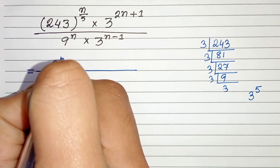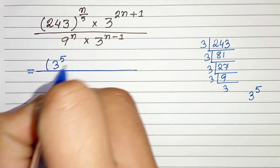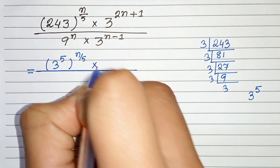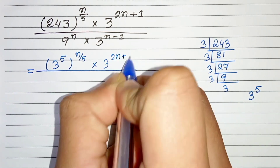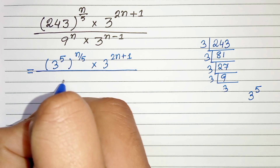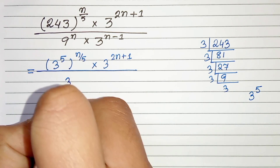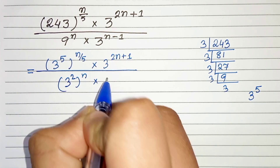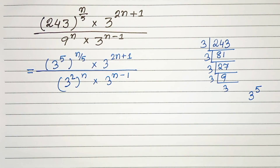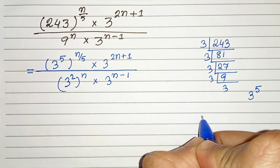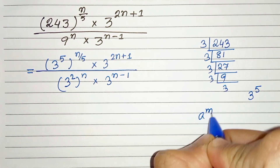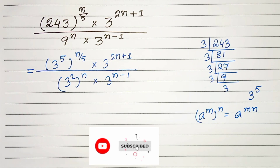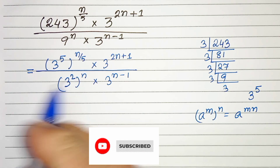So we rewrite: 3 to the power 5, and to the power n by 5, times 3 to the power 2n plus 1. In the denominator, 9 to the power n can be written as 3 squared, and here it is 3 to the power n minus 1. Now, we know from the exponential property that a raised to the power m, to the power n, can be written as a raised to the power m times n. Let's apply this here.